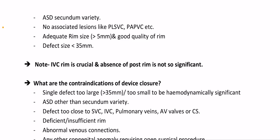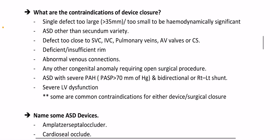What are the contraindications of device closure? Single defect too large (more than 35 mm) or too small to be hemodynamically significant; ASD other than secundum variety; defect too close to the SVC, IVC, pulmonary veins, AV valves, or coronary sinus; deficient or insufficient rim; abnormal venous connections; any congenital anomaly requiring open surgical procedure; ASD with severe PAH more than 70 mmHg and bi-directional or right-to-left shunt; severe LV dysfunction.